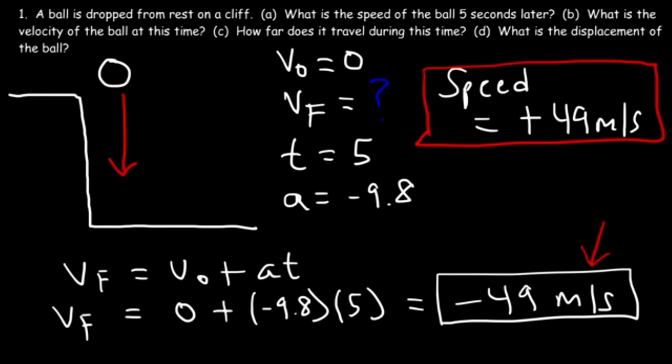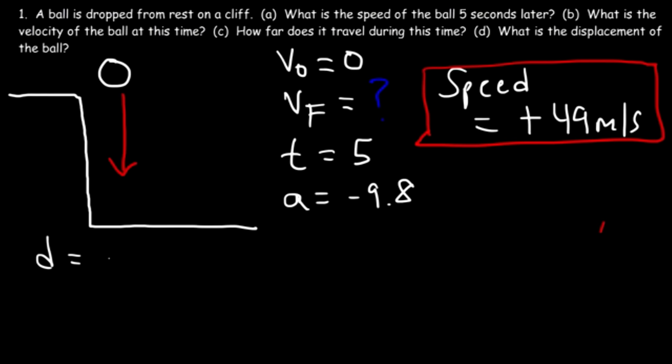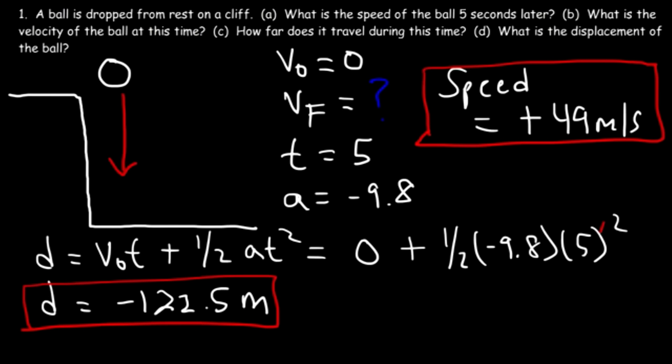For part C, how far does it travel during this time? The equation we need is: d equals v-initial times t plus one-half at squared. We have the initial speed, the time, and the acceleration. V-initial is zero, so that term drops out. Acceleration is negative 9.8, t is five. Half of negative 9.8 is negative 4.9; multiplied by 5 squared gives negative 122.5 meters.